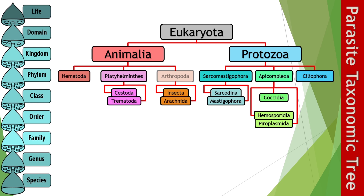The phylum Platyhelminthes are further subdivided into two classes: your tapeworms and your flukes. Your phylum Arthropoda, on the other hand, houses the insects and arachnids, among others not included in this lecture. The other big parasite kingdom is Kingdom Protozoa, which houses the relatively simpler unicellular parasites. The more prominent phyla include Sarcomastigophora, Apicomplexa, and the ciliates. Within phylum Sarcomastigophora, we have the amoebas and the flagellates. The Apicomplexans house the roundish protozoans as well as the blood-dwelling protozoans.